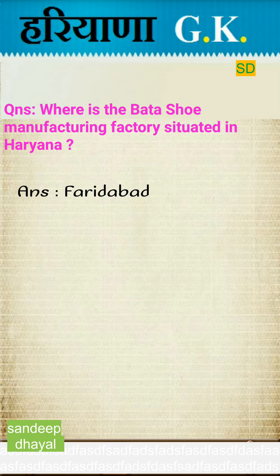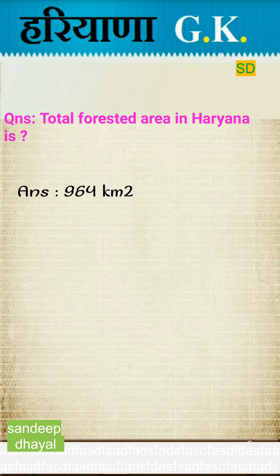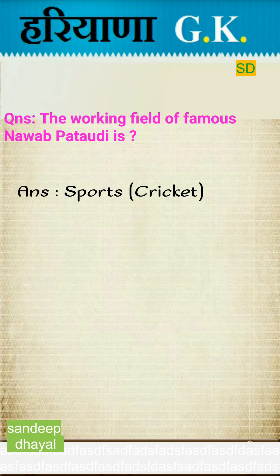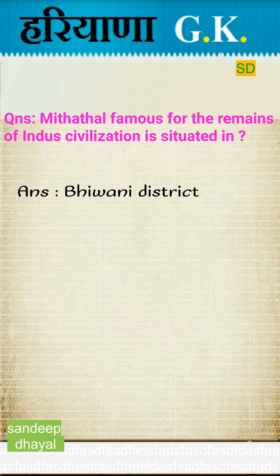Where is the Bata shoe manufacturing factory situated in Haryana? Answer: Faridabad district. Total forested area in Haryana is 964 square kilometers. The working field of famous Nova Pratavati is sports — cricket. Mithathal, famous for the remains of Indus civilization, is situated in which district? Answer: Bhiwani district.